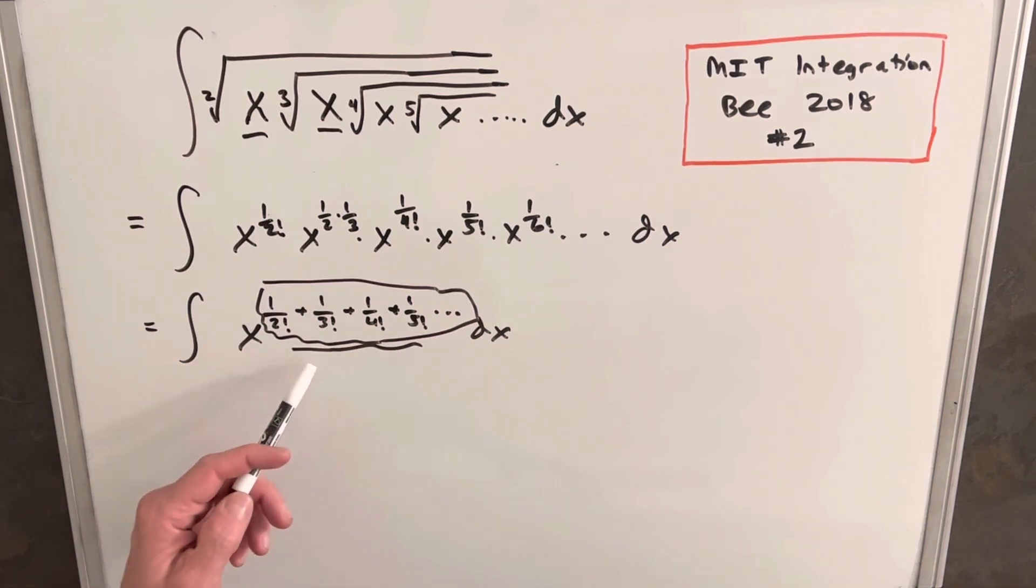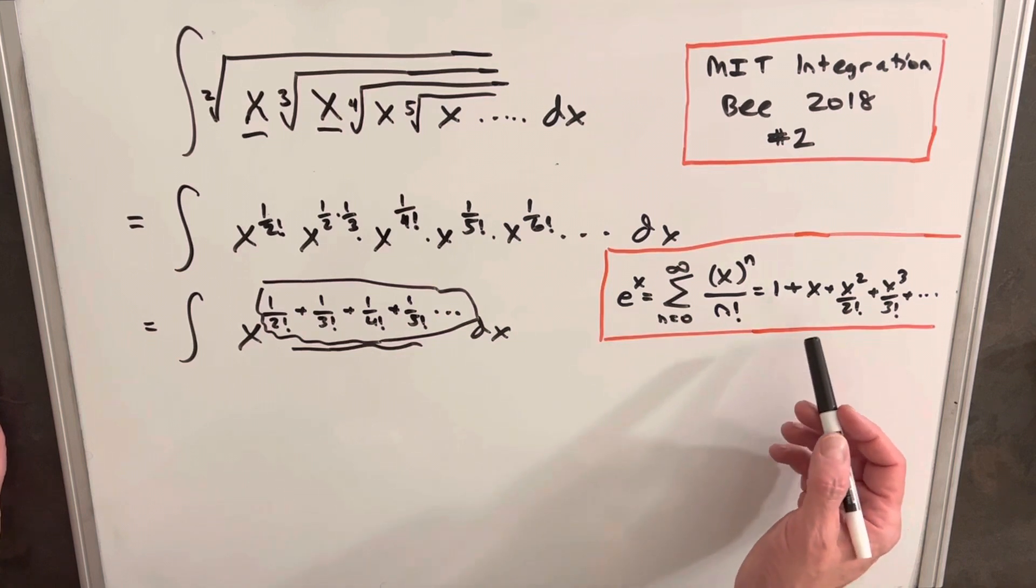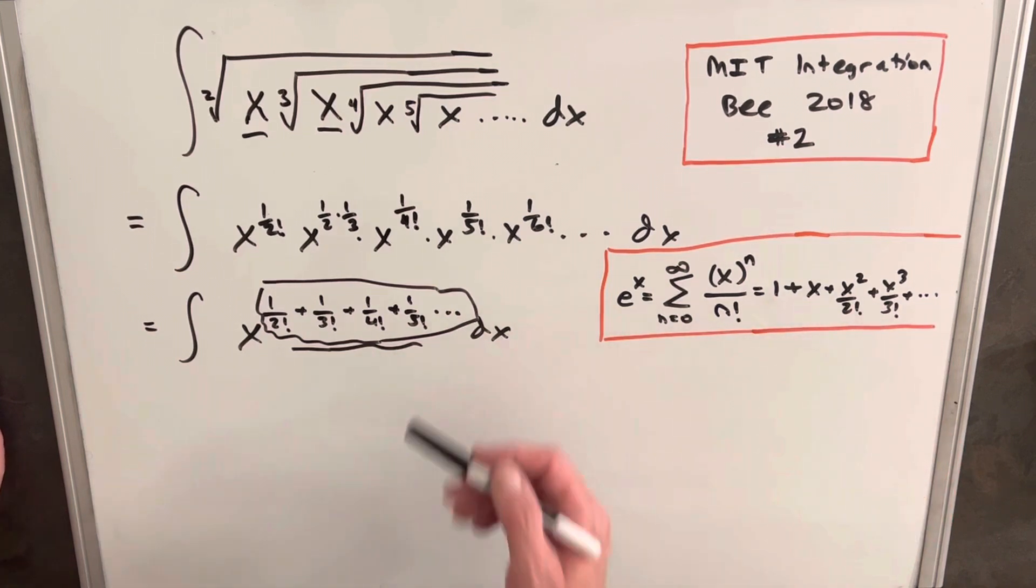And so when we want to evaluate this, what we can do is, you may notice that this looks a lot like the power series for e to the x. Okay, so now you can see on the right here we have the power series for e to the x. And you'll notice the factorial, so it's looking kind of similar.